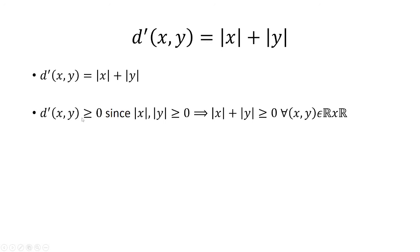The first thing we have to check is that d' is greater than or equal to 0. Well, that is true since the absolute value of x and absolute value of y are greater than or equal to 0 by definition. And when you add those two together, they're greater than or equal to 0. And we should also show that d' of x, y is equal to 0 if and only if x and y are equal to 0.